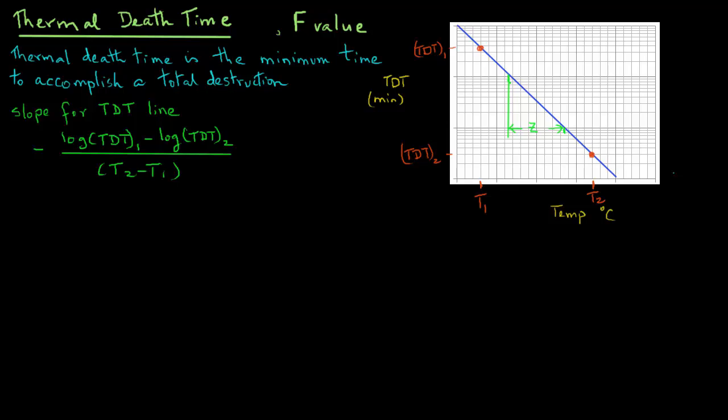Where Z was the change in temperature for one log cycle reduction. So we can express Z value on this same plot and then determine the slope using the Z value as minus. And we have a one log cycle reduction from 10 to 1, so in the numerator we have log(10) minus log(1) divided by Z.